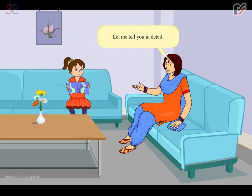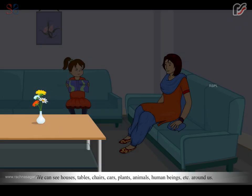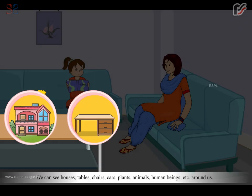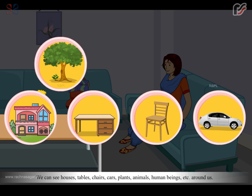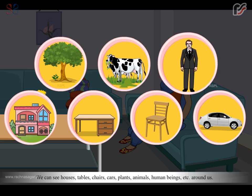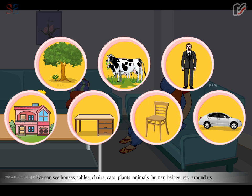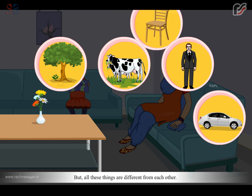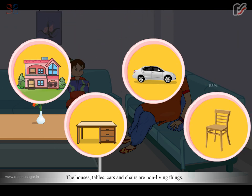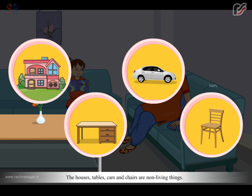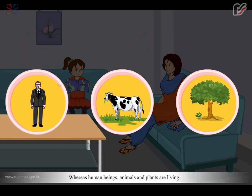Let me tell you in detail. We can see houses, tables, chairs, cars, plants, animals, human beings etc. around us, but all these things are different from each other. The houses, tables, cars and chairs are non-living things, whereas human beings, animals and plants are living.